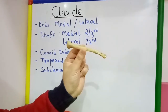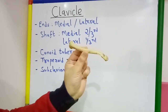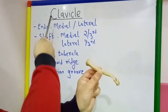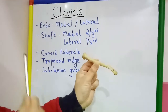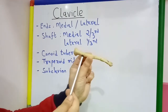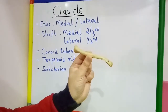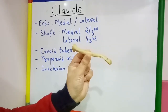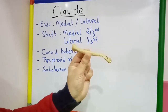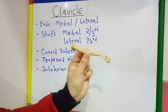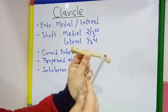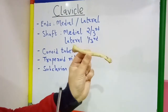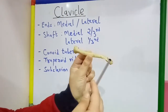Hello everyone, in this session I will demonstrate the clavicle. This is the clavicle, also known as the collar bone. It is a typical long bone and it is the only long bone that lies horizontally in our body. It is also subcutaneous throughout.